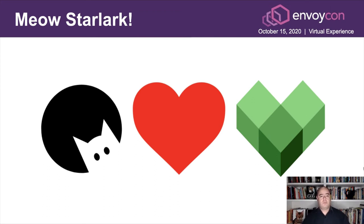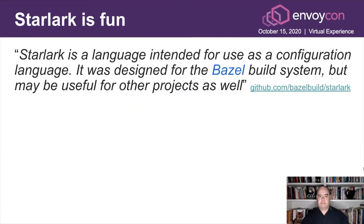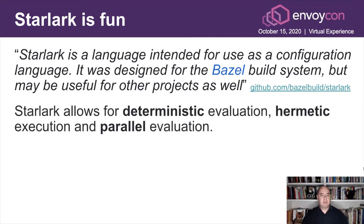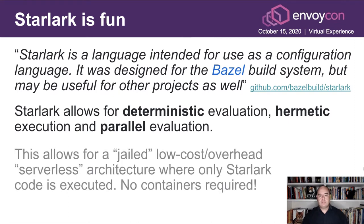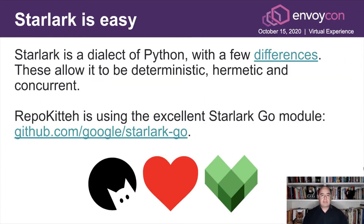I found that Starlark, which is part of Bazel, is actually perfect for this. Starlark is a language intended for use as a configuration language. It was designed for the Bazel build system, but may be useful for other projects as well. Starlark allows for deterministic evaluation, hermetic execution, and parallel evaluation, which allows for a low-cost, low-overhead serverless architecture where only Starlark code is executed. No containers required — we can take a script with all the appropriate constraints and just run it. It can do only what we allow it to do. Starlark is very easy; it's a dialect of Python with very few differences, and these differences allow all the properties we like: deterministic, hermetic, and concurrent. RepoKitten is using the Starlark Go module by Alan Donovan, which is amazing.